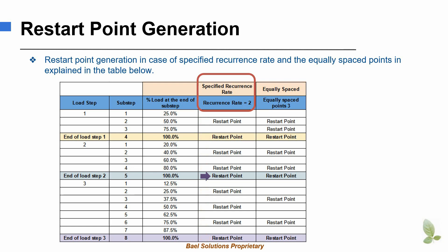No matter what recurrence rate is, a restart point will always be written at the end of the load step. In the second case, restart points are requested at the three equally spaced points. For the first load step, the restart points are written at sub-step 2, 3 and 4. That is, 50% load, 75% load, and 100% load.